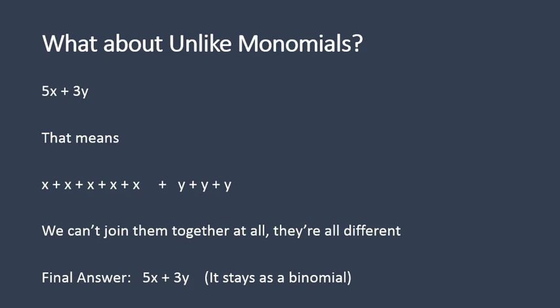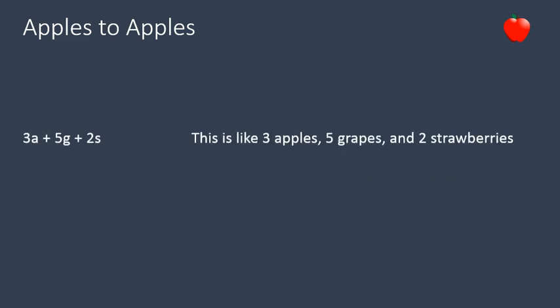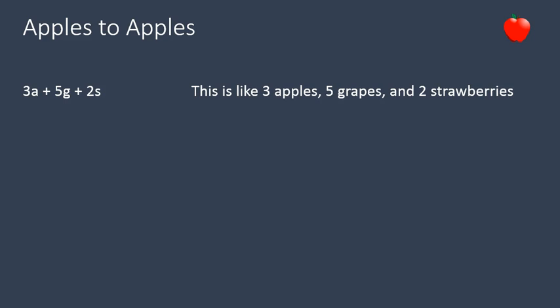So when we're adding polynomials or monomials, you need to have like terms. It's kind of like comparing apples to apples. Let me show you an example. If I have 3a plus 5g plus 2s, let's say that's 3 apples, 5 grapes, and 2 strawberries — a, g, and s.